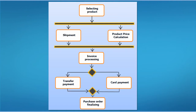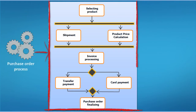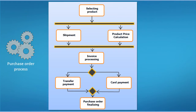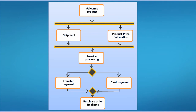An example of a web service composition is the purchase order process. In this process, a set of services are orchestrated to select a product, calculate its price, select a shipper, and finally handle the payment of the order.